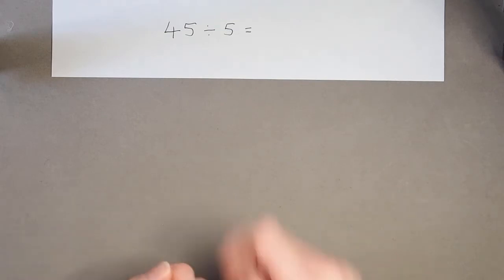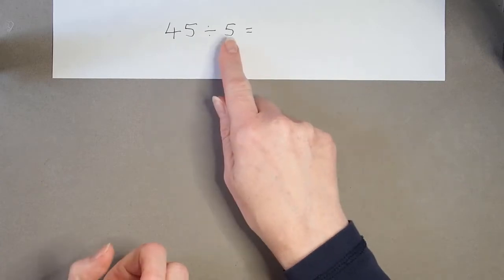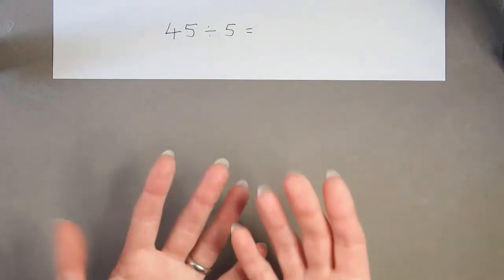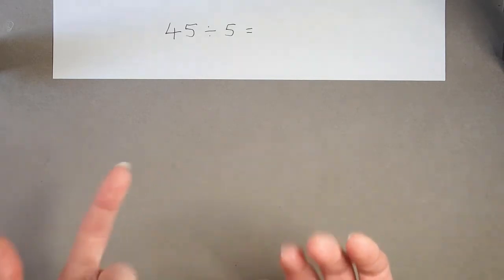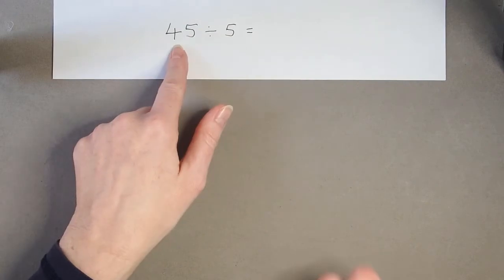So we can see this time we're going to be counting in 5's. Because we're putting what we start with into groups of 5. 5 in each group each time. And we have 45 altogether.